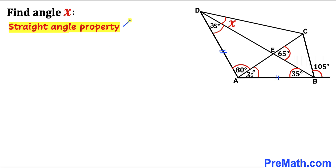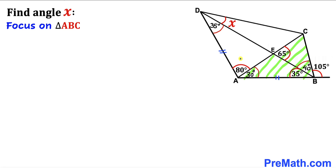Recalling the straight angle property, let's focus on this angle. The whole straight angle is 180 degrees. We know this angle is 35 degrees and this angle is 105 degrees, therefore we conclude that this remaining angle must equal 40 degrees.